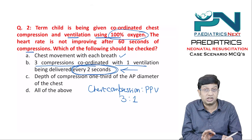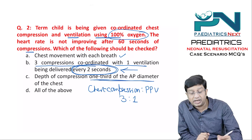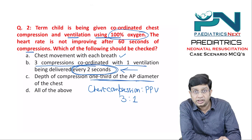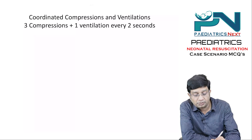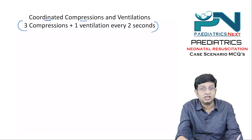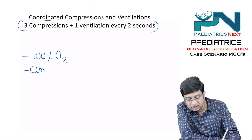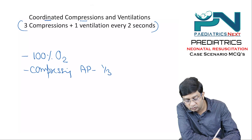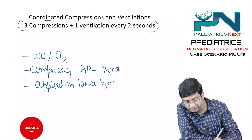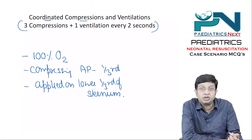Additional key points for chest compressions: depth of compression should be one-third of the anteroposterior diameter. Chest compressions are applied over the lower one-third of the sternum. During compressions, use 100% oxygen. The 3:1 ratio of compressions to ventilations is delivered every two seconds.